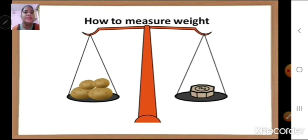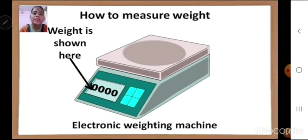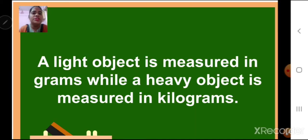Here you can see this is a weighing machine. Now in some vegetable shops we have this kind of weighing machine, and in some shops we have a digital or electronic weighing machine. Here we don't use metal weights — directly the weight is digitalized. We just keep the potatoes or whatever you need to weigh and the weight will be shown.